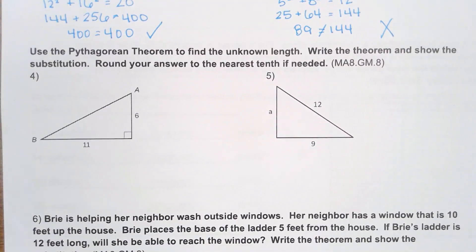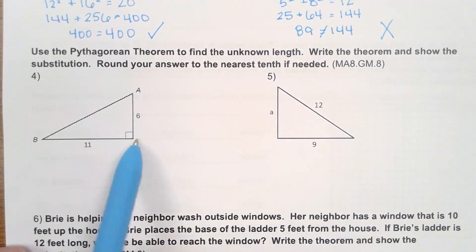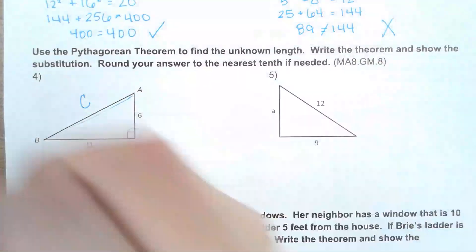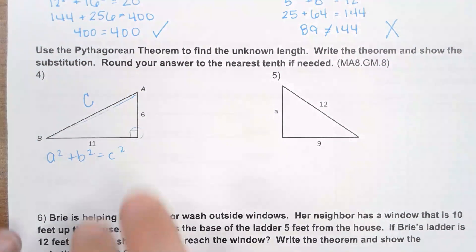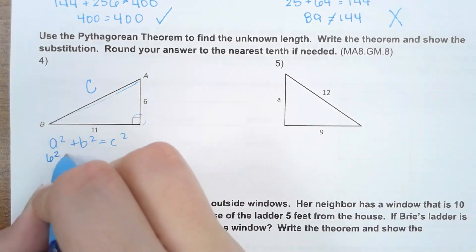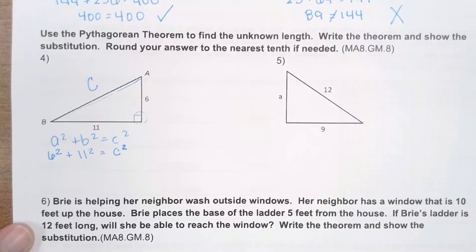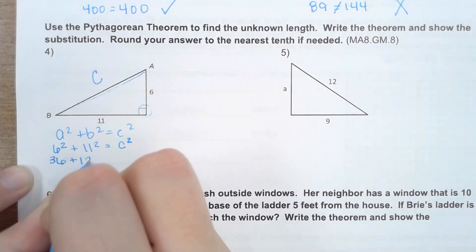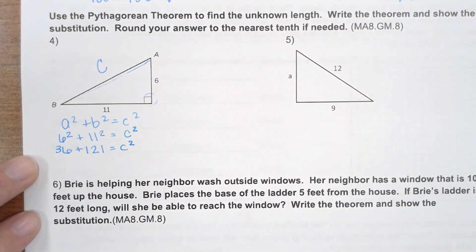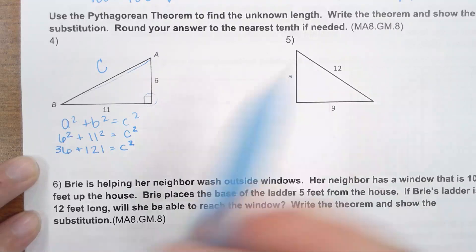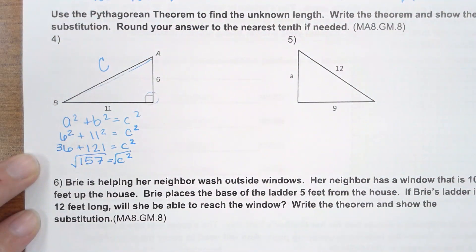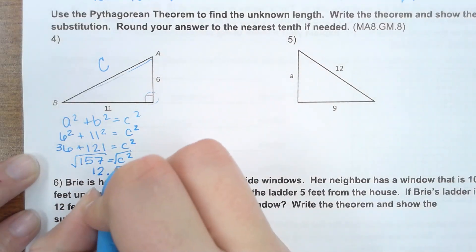This time we're going to use the Pythagorean theorem to find unknown lengths. Write the theorem, show the substitution, round to the nearest tenth if needed. Looking at the first triangle, the legs are 6 and 11 because they are attached to the right angle, and we are trying to find the hypotenuse. Start with a² + b² = c². 6 and 11 are plugged in for a and b. 6² = 36, 11² = 121. Adding together: 36 + 121 = 157. The square root of 157 gives us 12.5 rounded to the nearest tenth.